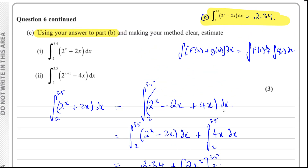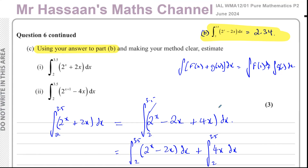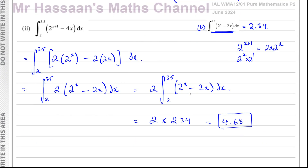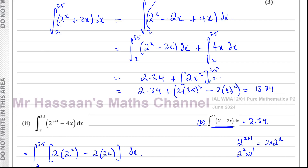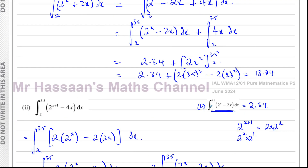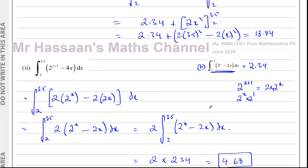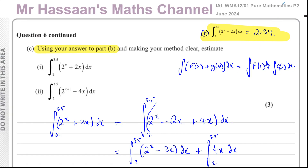This type of question — using the answer from an earlier part to find a related integral — is now very common on P2 papers, especially since the new specification. There are many variations, but the basic principle is to make the new integral look like the one you already have an answer for, either as a sum or as a constant multiple. That concludes question six from the June 2024 P2 paper.